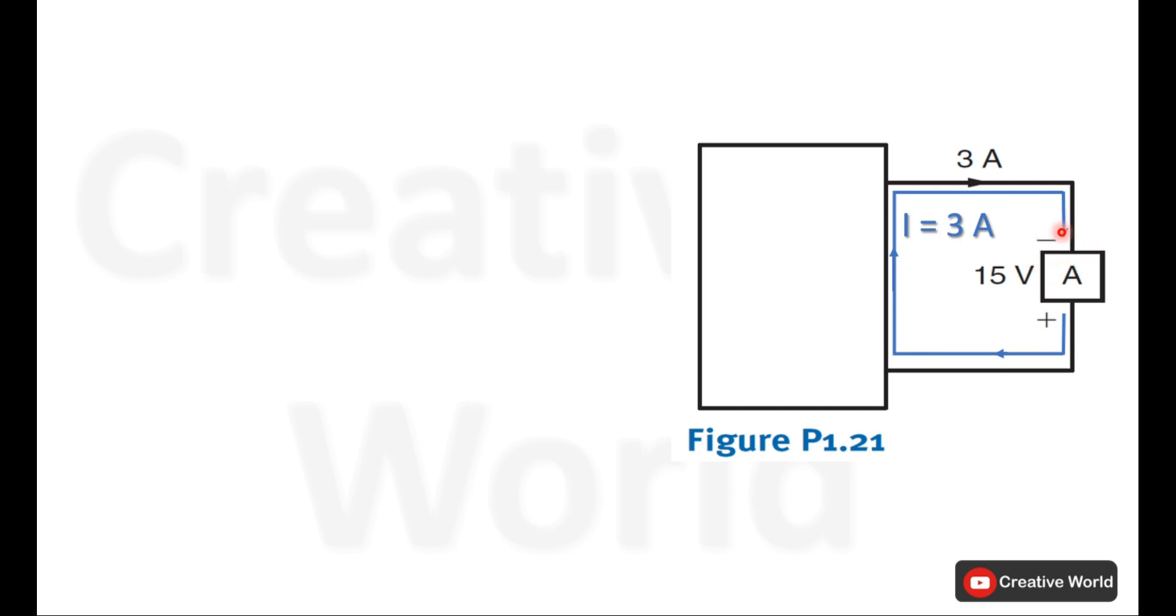In this scenario current is entering from the negative terminal of element A and leaving from the positive terminal. So according to passive sign convention theory, if the current is entering from the negative terminal of an element and leaving from the positive terminal of that element, the current will be indicated with a minus sign.